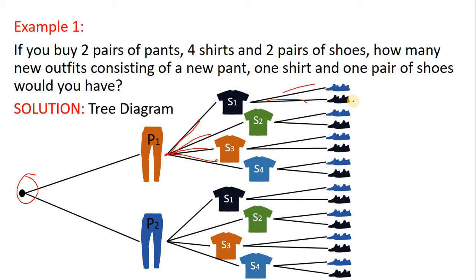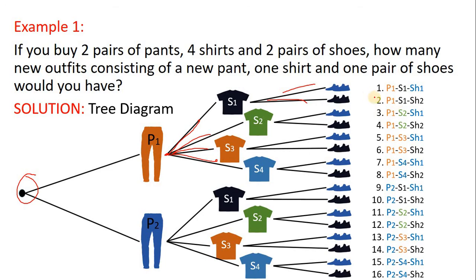You need to choose which one of the two pairs of shoes to use. So if I list it properly, this branch going to shoes number one is pants one, shirt one, and shoes number one. Then if I choose the other branch — first action: pants number two, second action: shirt number two, third action: shoes number two — I have the combination P2, S2, SH2. In total, you still have 16 new outfits consisting of a new pair of pants, one shirt, and one pair of shoes.